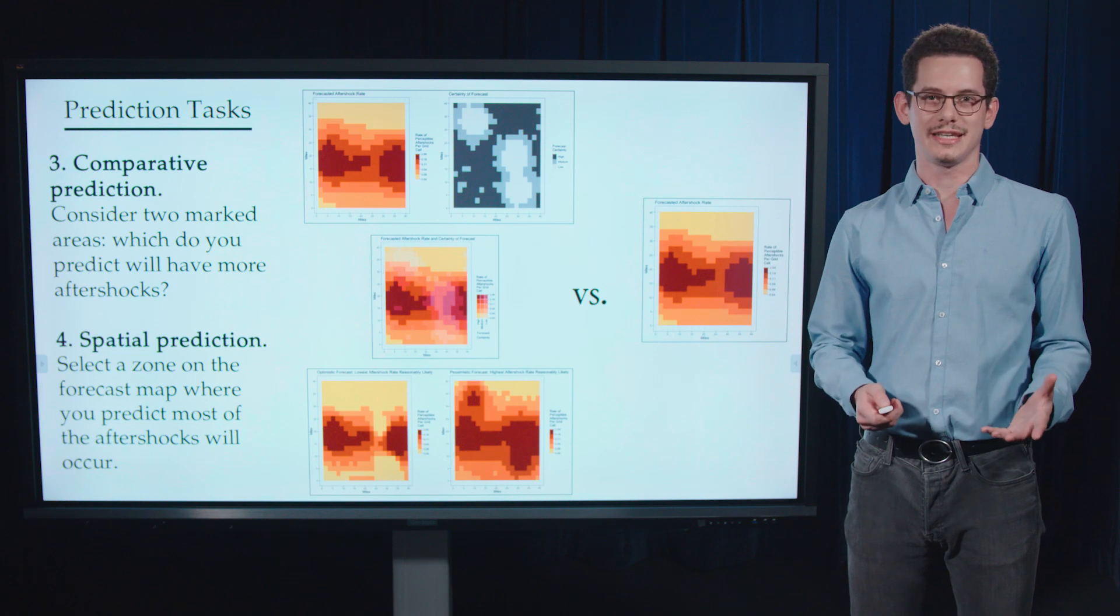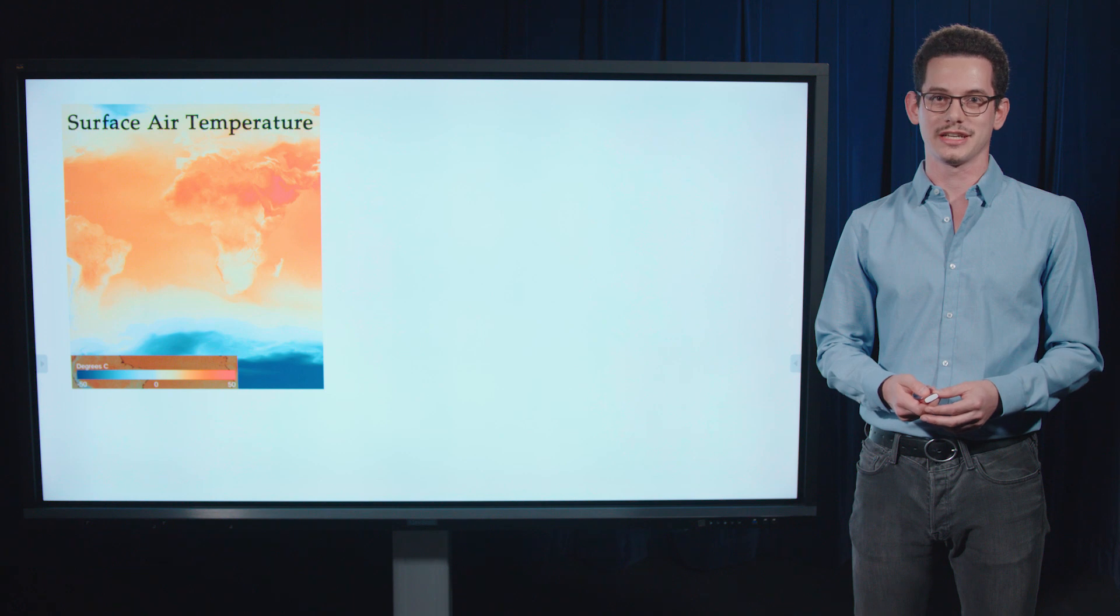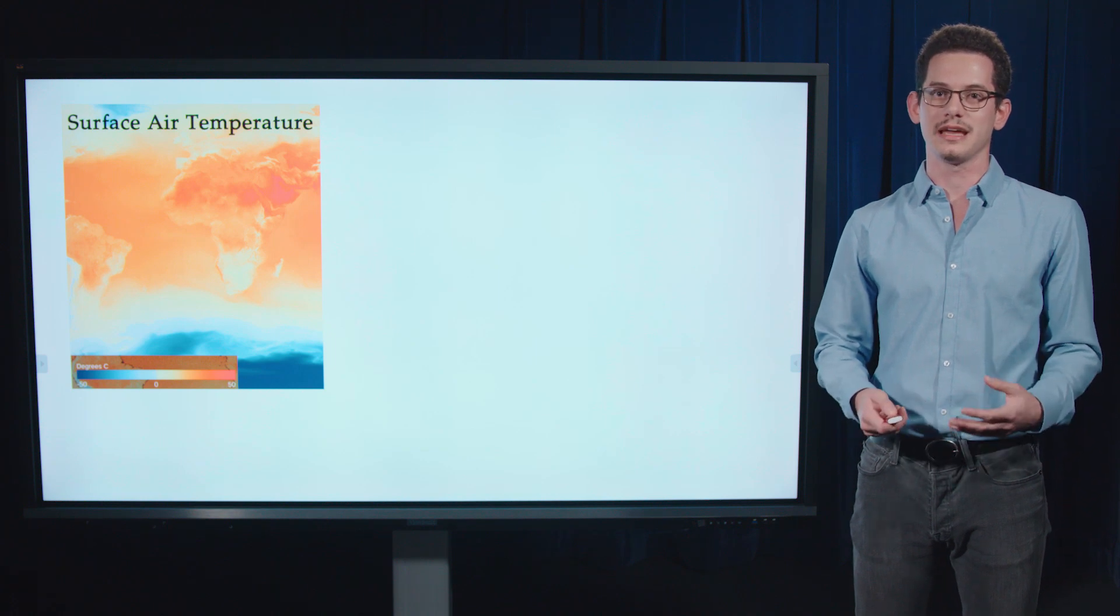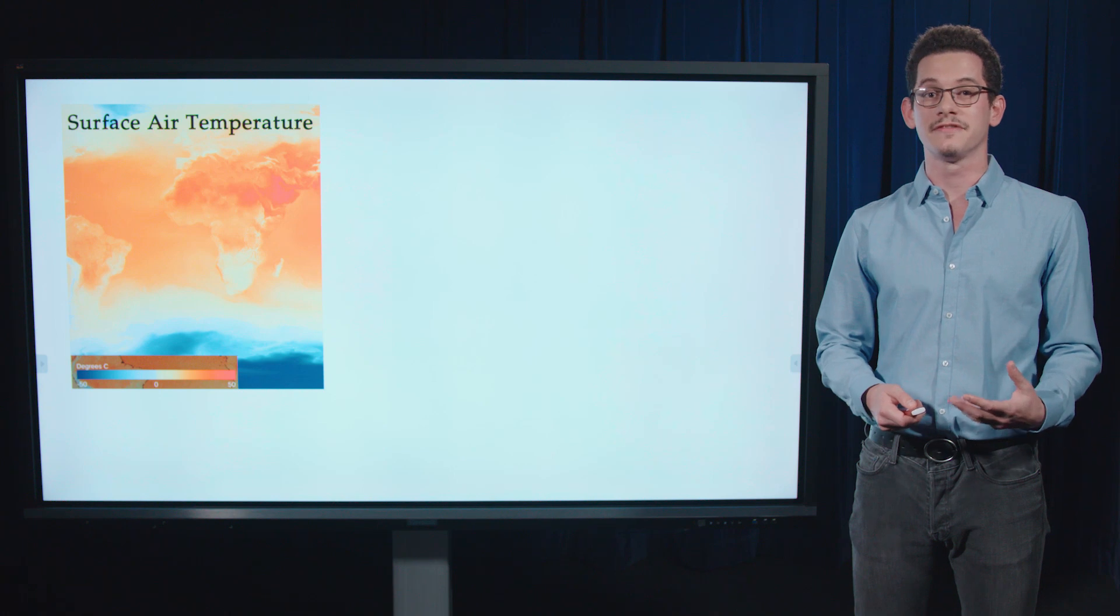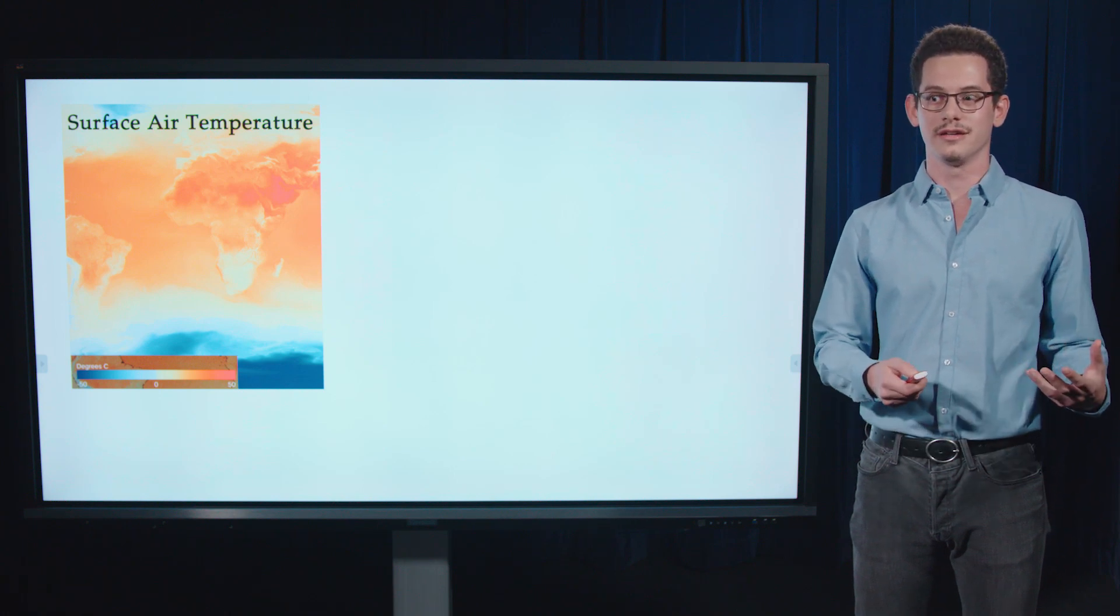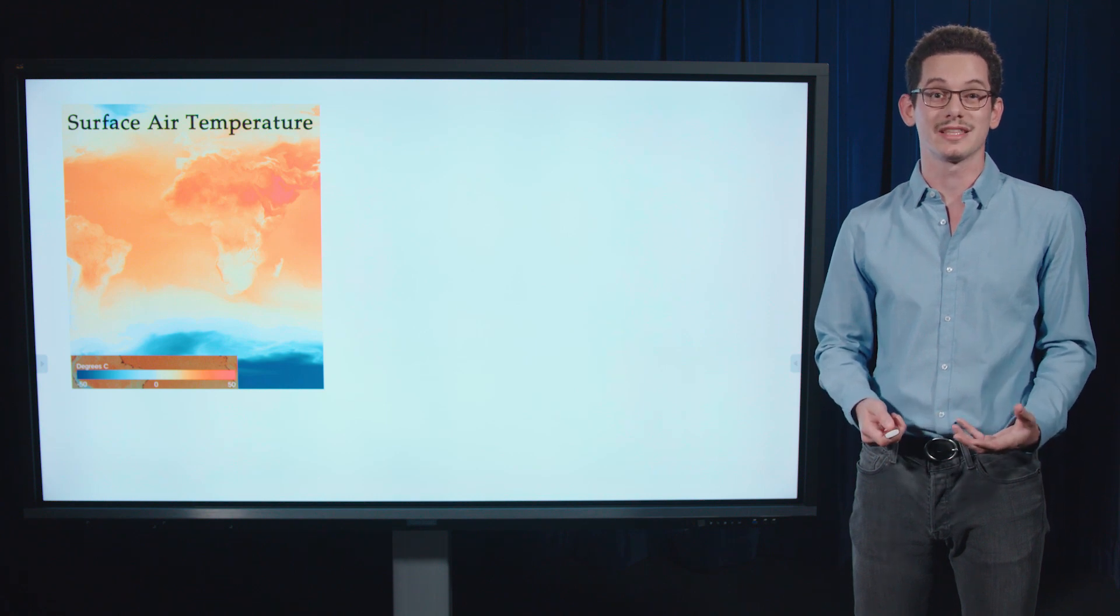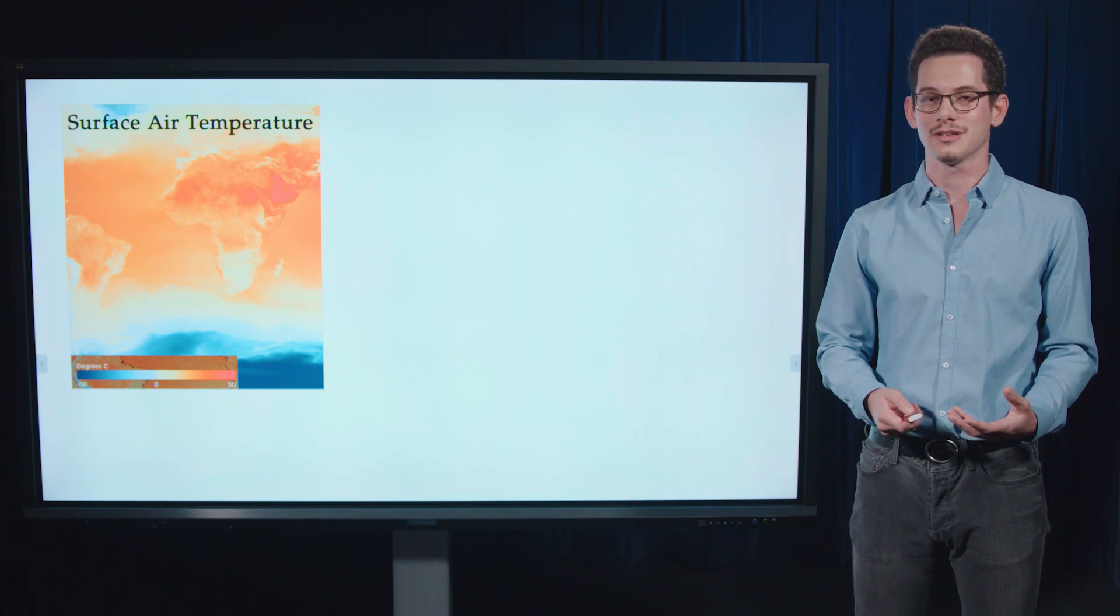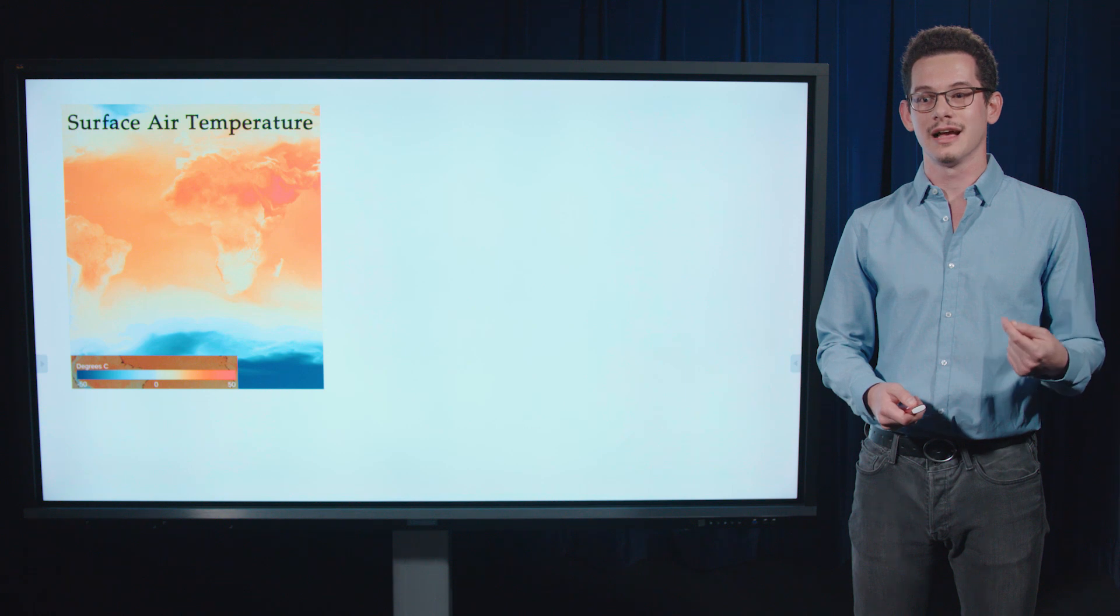So what did we learn today? Well, let's go back to this air temperature prediction from NOAA's GFS. So I argue that this is not the most effective way to display this forecast. And it's because users are left to fill in the blanks on where the forecast is more or less certain. And research shows that that's exactly what they'll do in the absence of an uncertainty visualization.